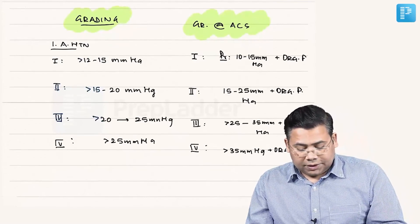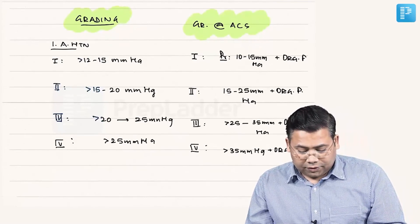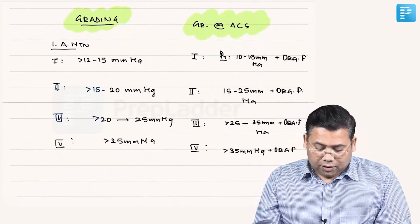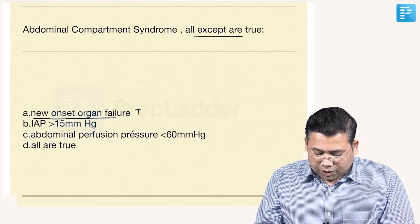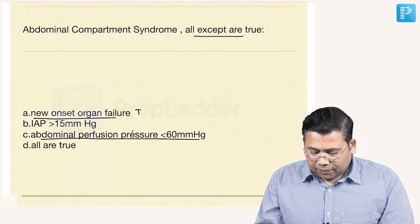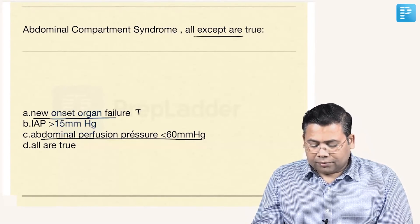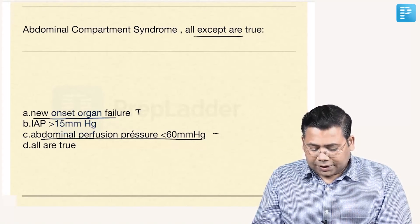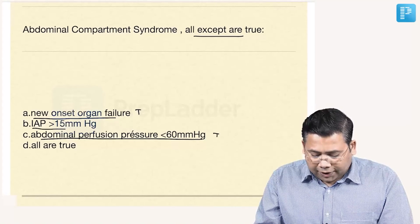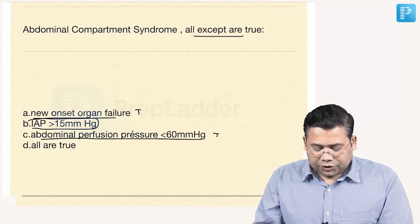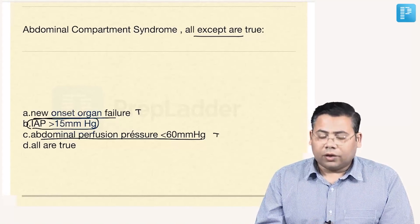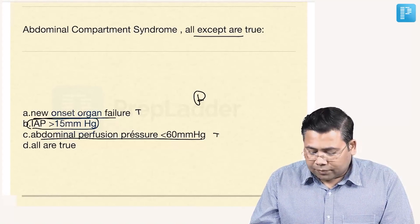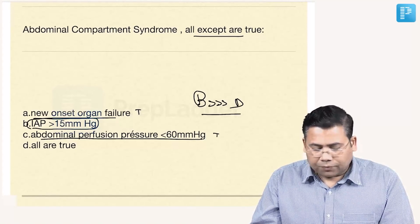Now looking at the question options: new onset organ failure — true. Abdominal perfusion pressure less than 60 mmHg — true. However, the pressure should be more than 20 mmHg, so option B is a better answer than option D. The answer for this question is B.